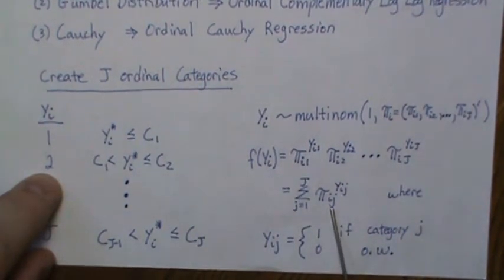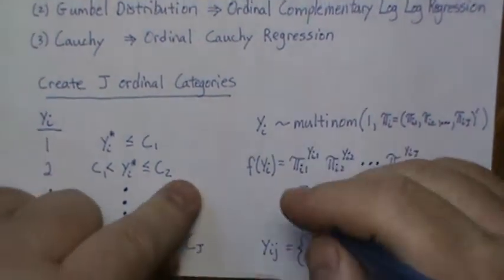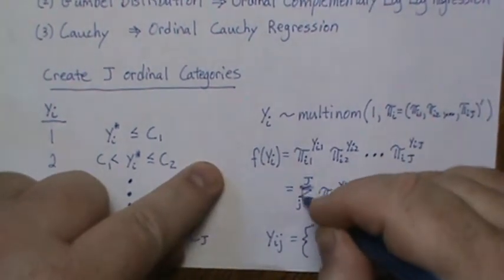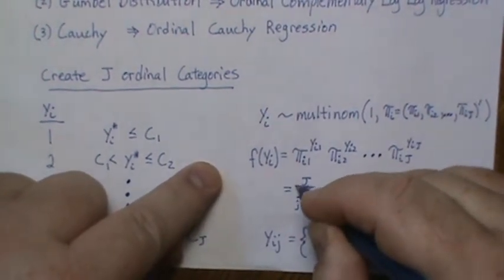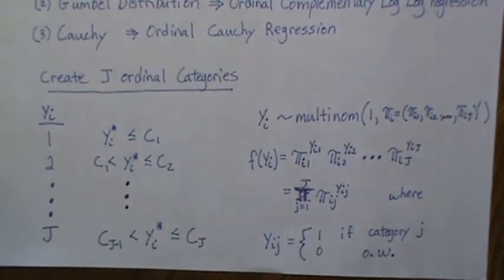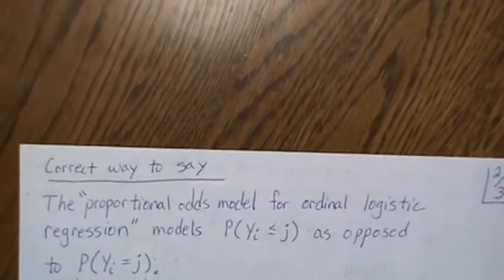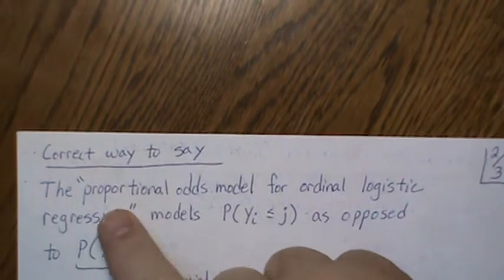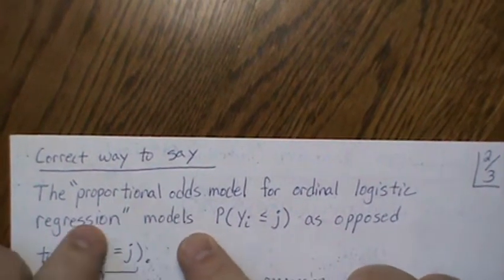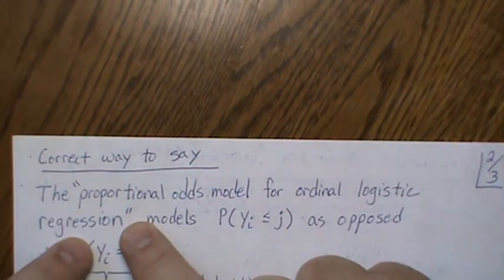So this is a product, not a sum. And the yis are either zero or one. So each observation, each yi gets J little yijs, and they're all zeros or ones. Now, note that the correct way to say this is in quotes here, proportional odds model for ordinal logistic regression, right? Most people just say the proportional odds model.